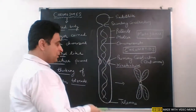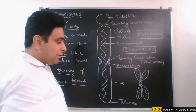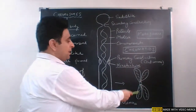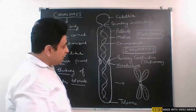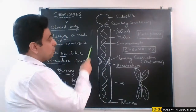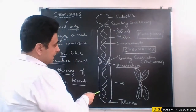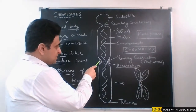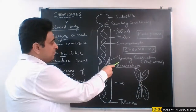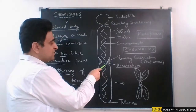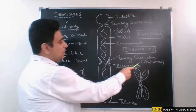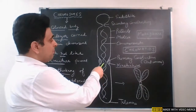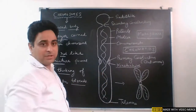When it gets mature, this chromatid undergoes duplication and forms a pair of chromatids. In a single chromatid, there is one constriction in the center that is called the primary constriction. This primary constriction is also called the centromere — we can generally say that the center of the chromatid is called the centromere.